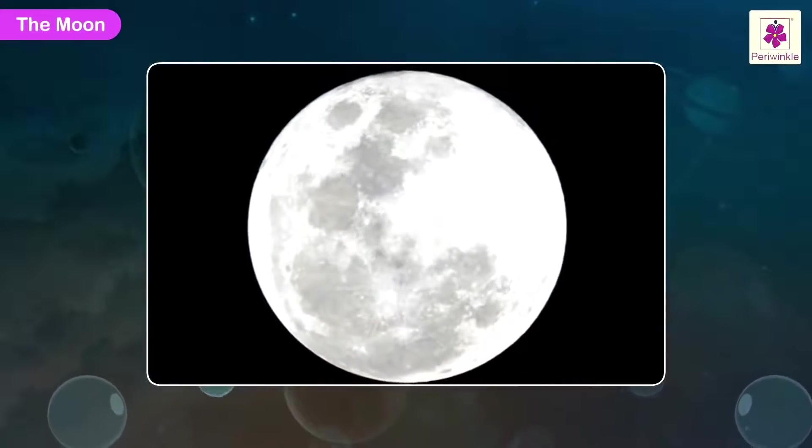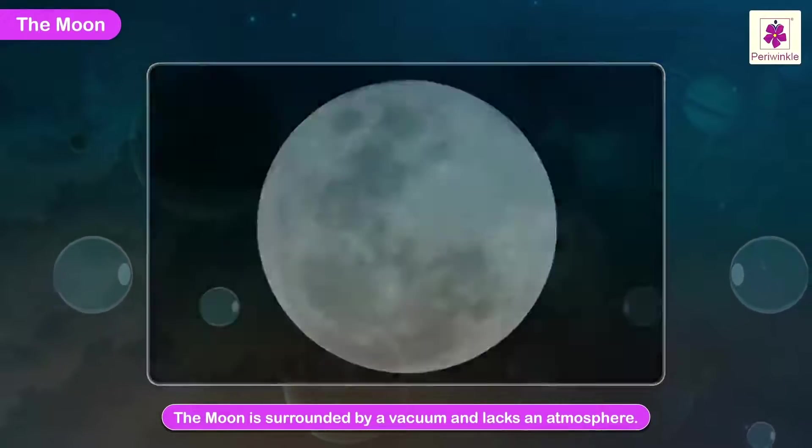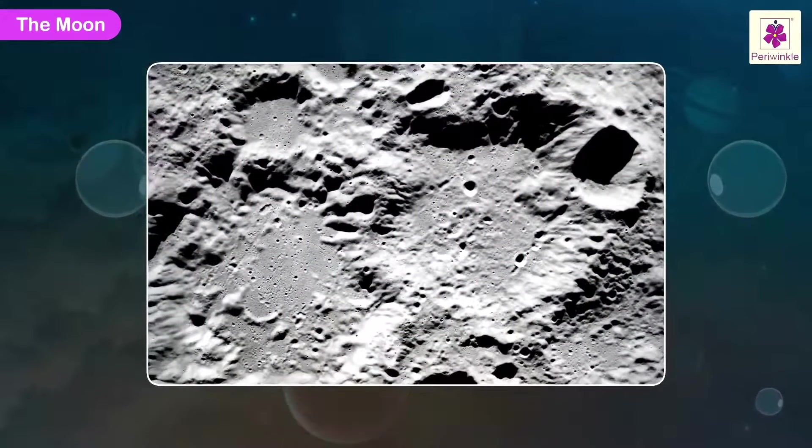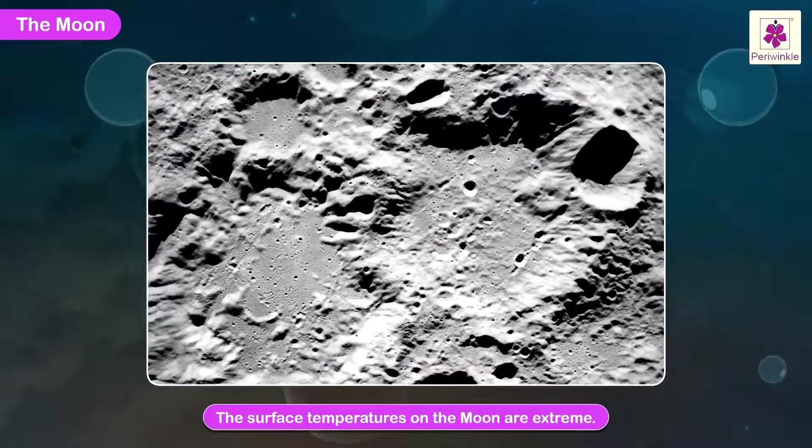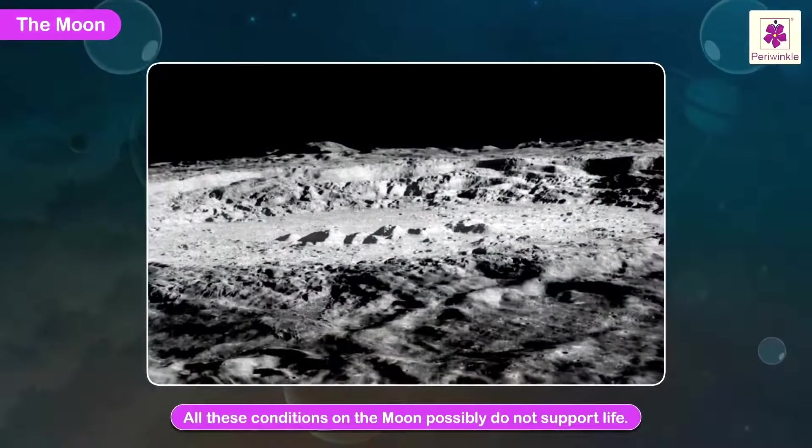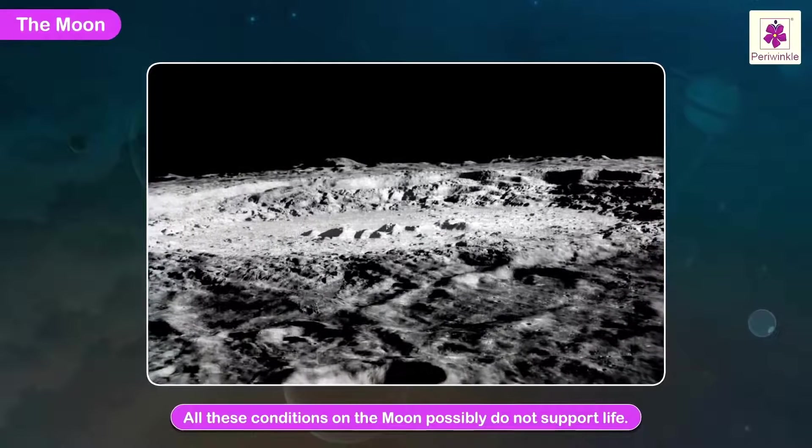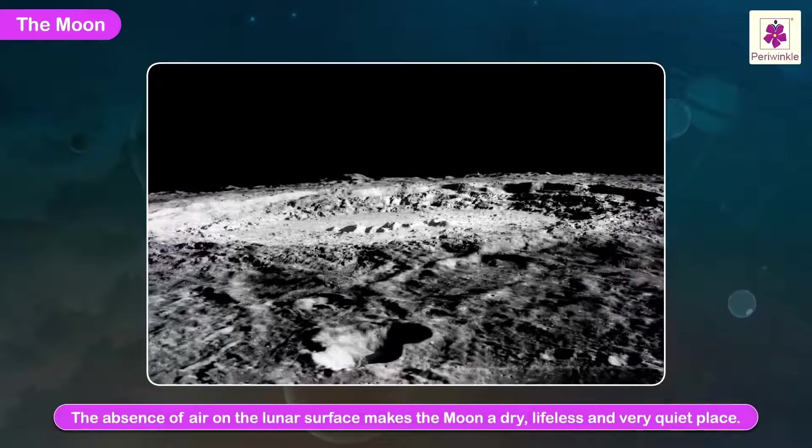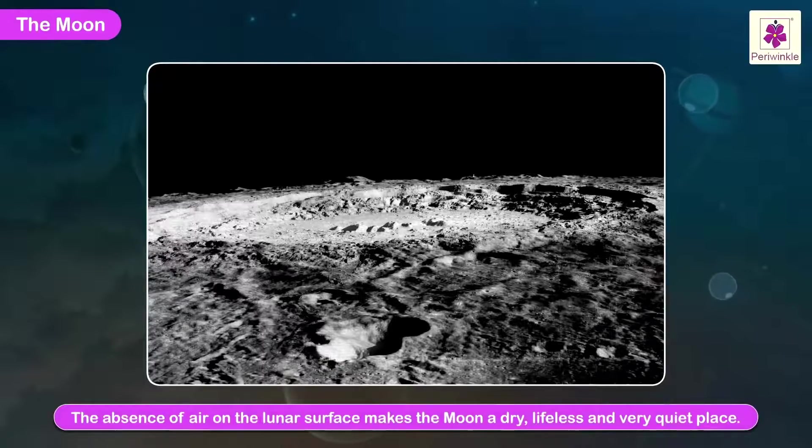The Moon is surrounded by a vacuum and lacks an atmosphere. It has no liquid water on its surface. The surface temperatures on the Moon are extreme. All these conditions on the Moon possibly do not support life. The absence of air on the lunar surface makes the Moon a dry, lifeless and very quiet place.